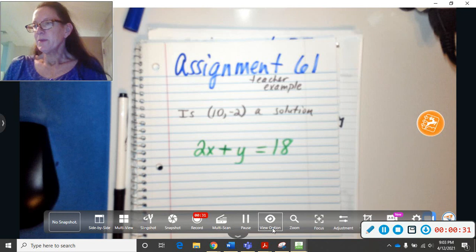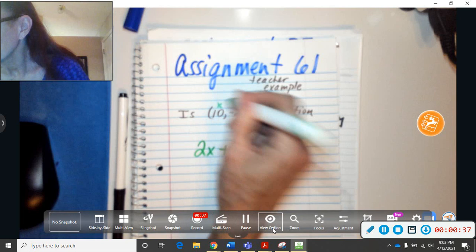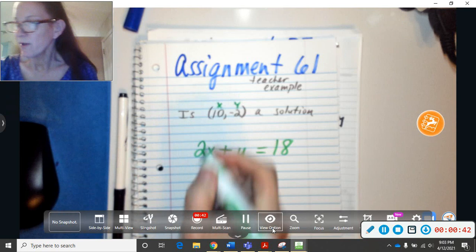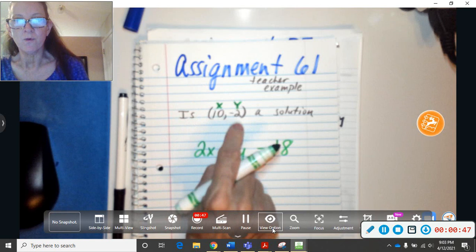So what I'm going to do is label the first one in the parentheses as always x and the second number is always y. You should know that by now, but remember x comes first in the alphabet and then y. So that number is your x coordinate and that number is your y.